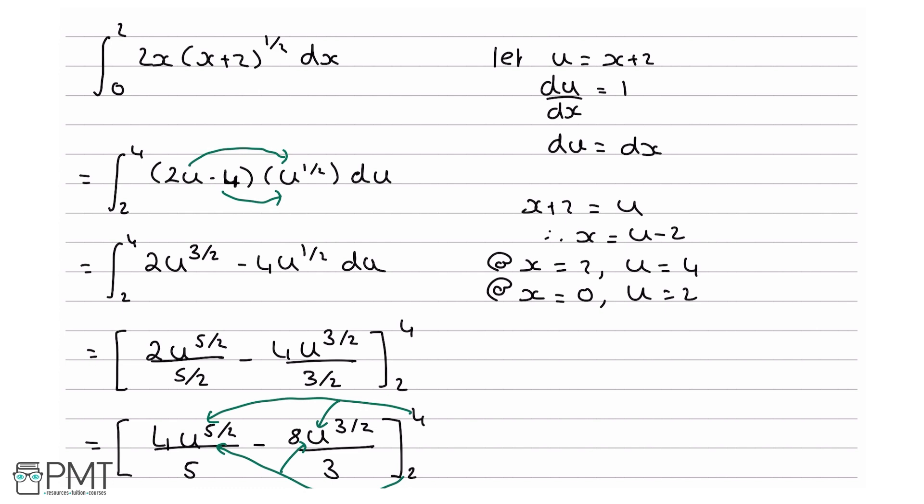Your second mark comes from doing the u substitution of u equals x plus 2 and getting by extent that dx by du equals 1. So doing this line here and getting this result will be enough to get us both of our first two marks.